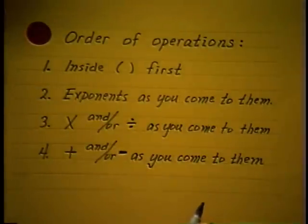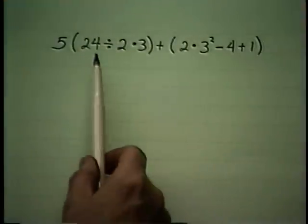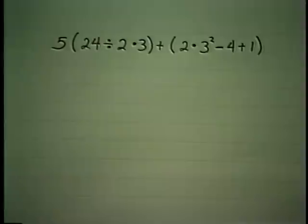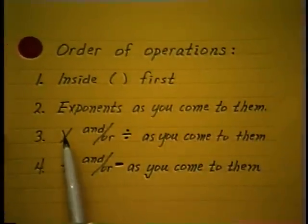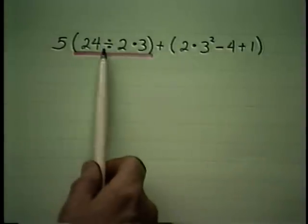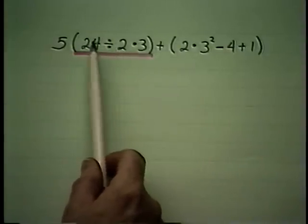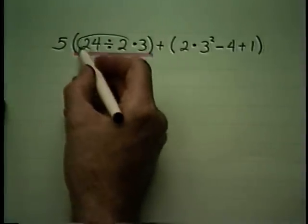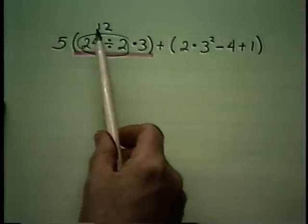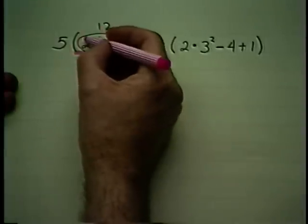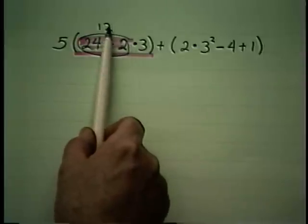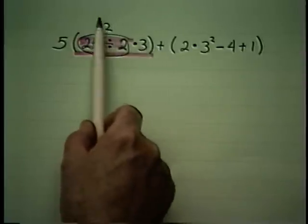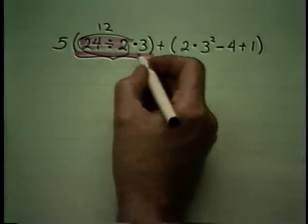So let's apply that to the problem we just had. First we're going to get inside the parentheses — the first parentheses we see, reading left to right. Now that we're inside, we look for exponents. There aren't any. Then you look for times and/or divisions and do them as you come to them. There's a division between 24 and 2, so I'll do this first, and that gives me 12. Looking for more — 12 has replaced that entire bit. There it is: 12 times 3 is 36. So this whole bit here has become 36.